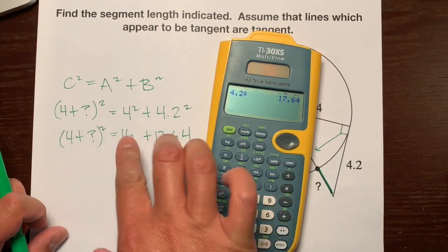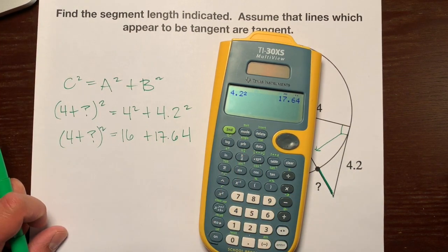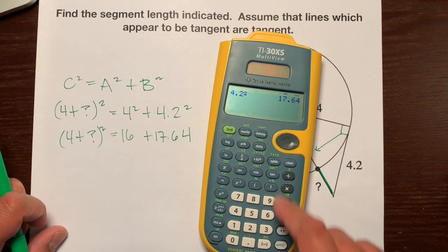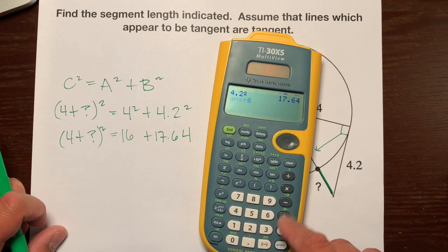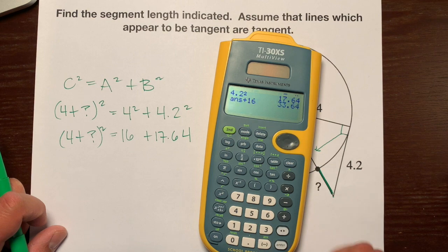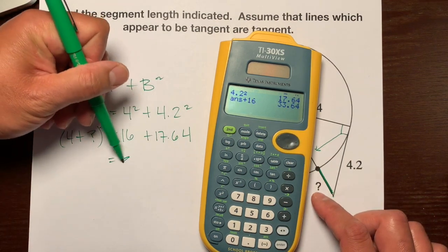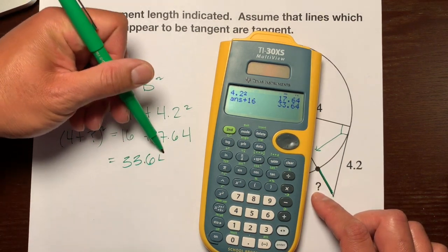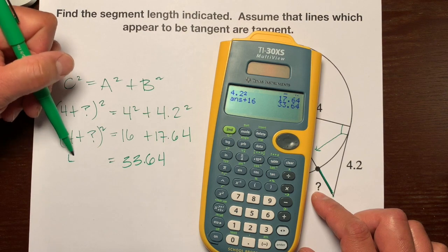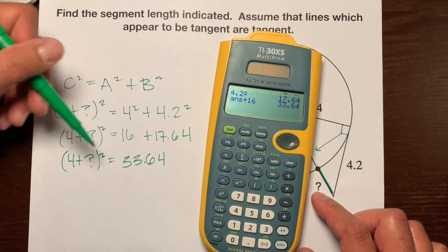Okay. And let's combine these two like terms. So 16, so we still have the 17.64 plus 16, which is 33.64. And we'll bring this down 4 plus question mark squared.